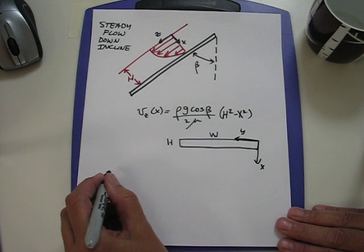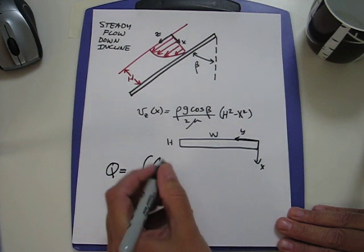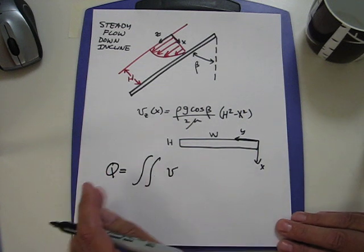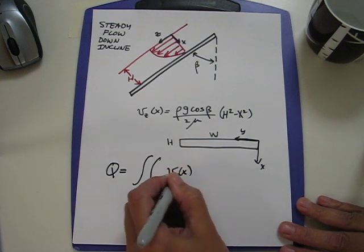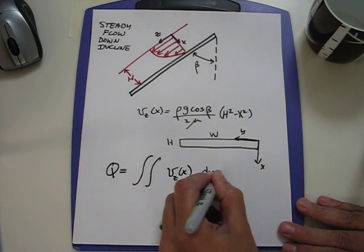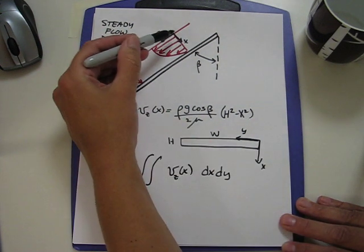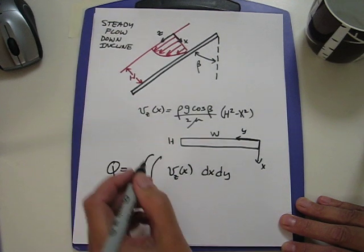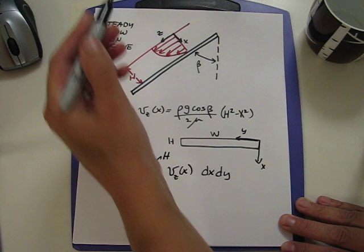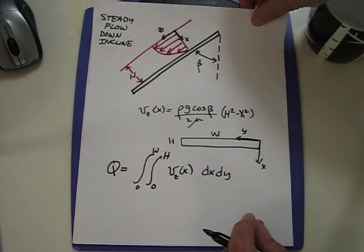Now I'm going to use my formula. The flow rate is equal to the integral over this cross-sectional area of the velocity, which in our case is a function of just x, and it's the z component of velocity, but it's going to vary in the x and y directions. x varies from 0 to h, and y varies from 0 to some width value w.